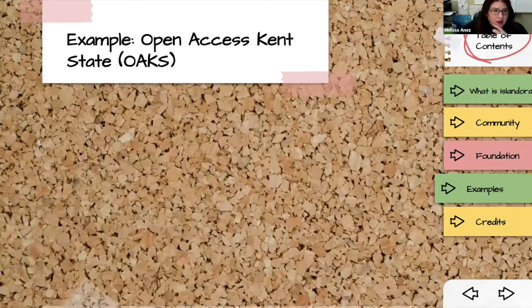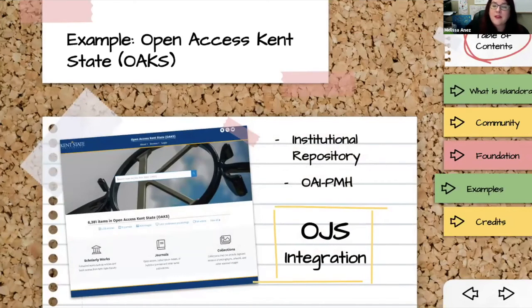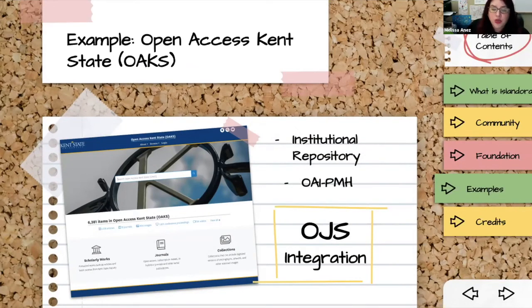First is Open Access Kent State OAKS — the very first institutional repository to go into production using Islandora 8. As a result of being on the bleeding edge, they built a tool to support OAI-PMH harvesting that has been rolled back into core Islandora. They're also doing something interesting: integrating directly with Open Journal Systems, the most popular open source journal publishing tool in the world, using OJS for editorial workflow and peer review, then publishing the finished results in Islandora.